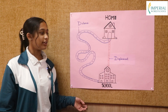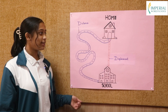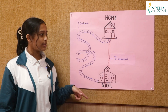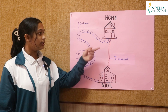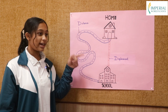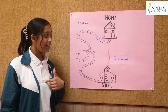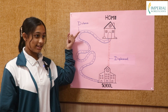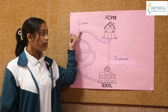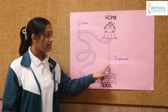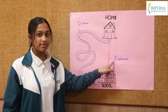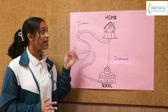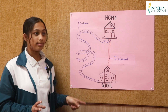This is the chart of the route I take every day from my home to school. The blue path indicates the route I take every day, which is also known as the distance, but the red path right here is known as the displacement because it is the shortest path between my home and my school.